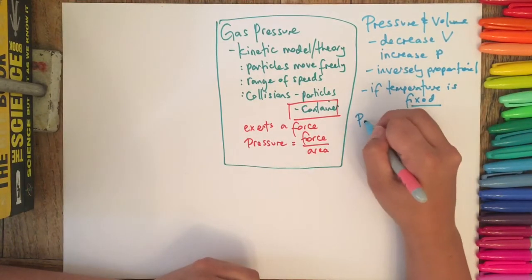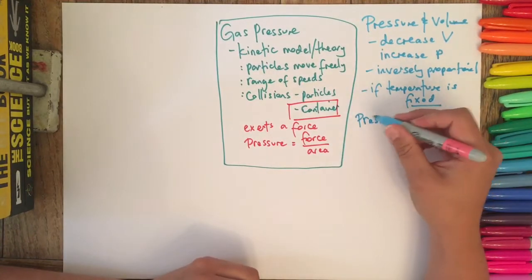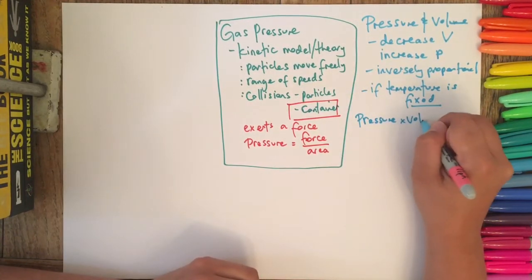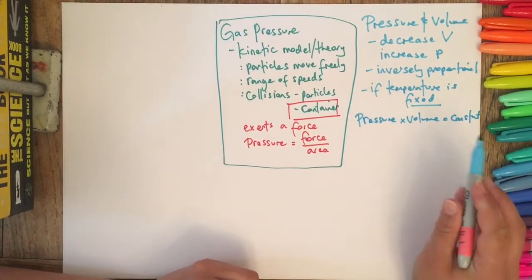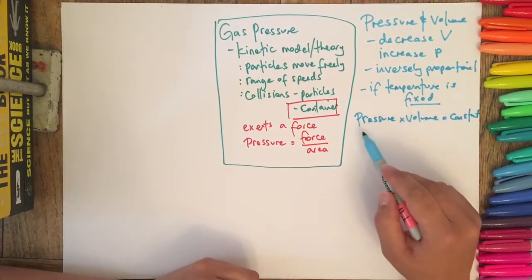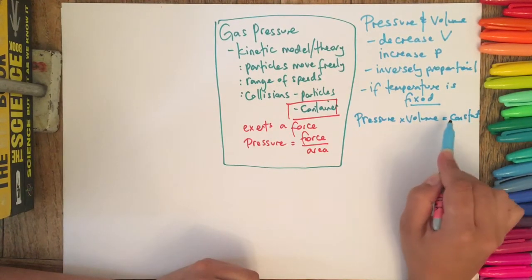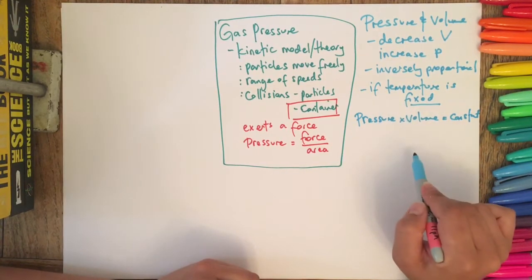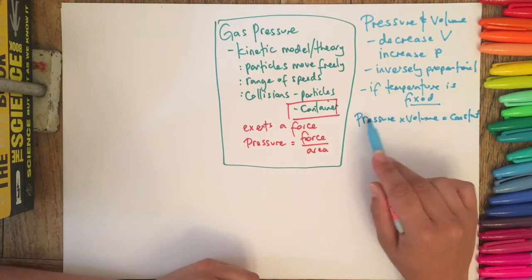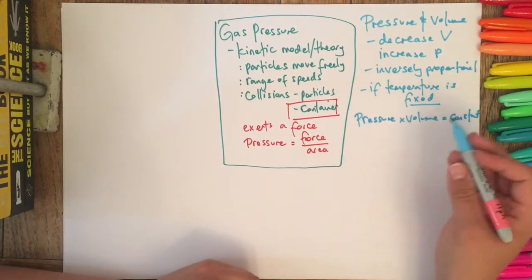So we get an equation from this. The condition is if the temperature is fixed, we'll come on to why that's the case in a minute. The equation that you get given in your equation booklet at the front is pressure times volume equals constant. So what that means is if you've got a starting pressure and a starting volume, you can calculate the constant for that scenario, and then if it gives you say a new volume, you can use the constant and the volume to then work out what the finishing pressure would be.